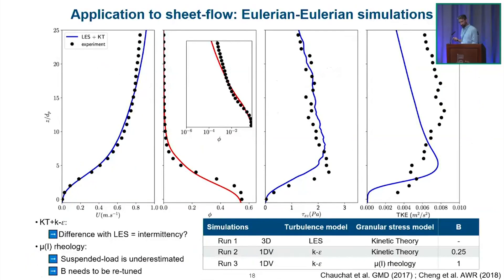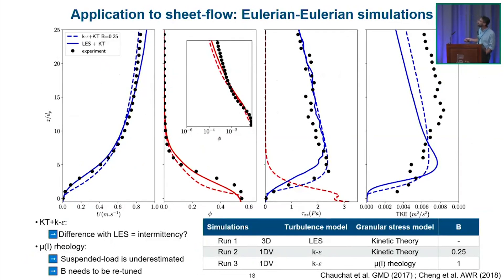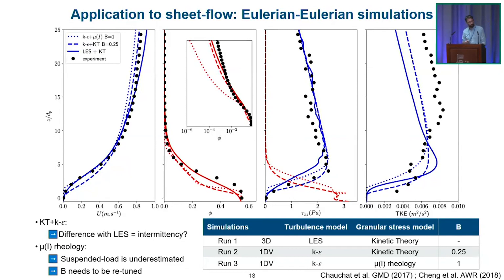We have LES results and also want RANS simulations. A 1D simulation takes one hour on a laptop versus one month on a couple hundred CPUs for LES. The K-epsilon model with kinetic theory does a decent job but has problems in the very dense layer; kinetic theory predicts dilute suspension well. Using dense granular flow rheology with the same K-epsilon model, the dense part is quite good but suspension prediction is lacking. With this approach, we can predict sediment transport driven by a unidirectional flow.